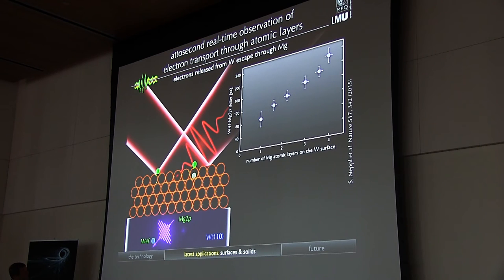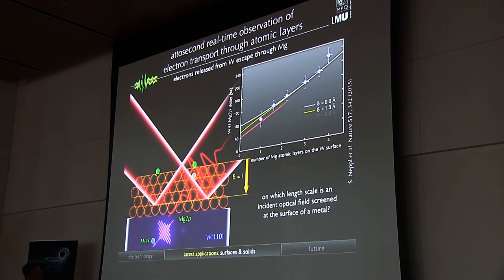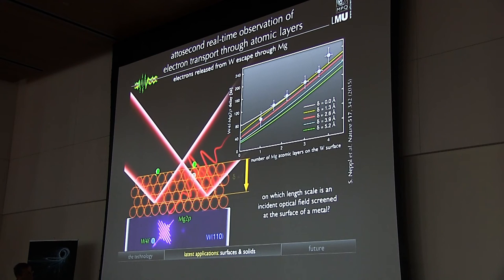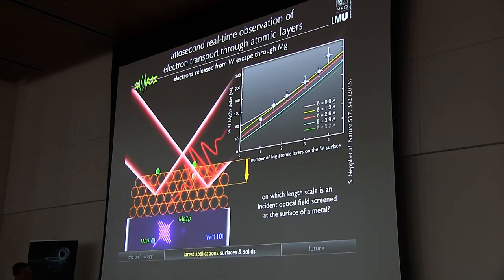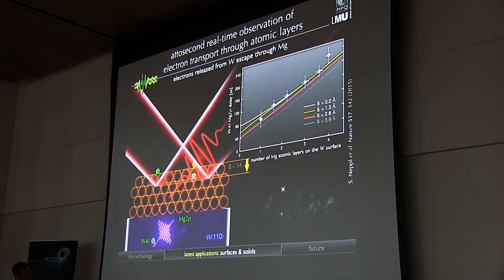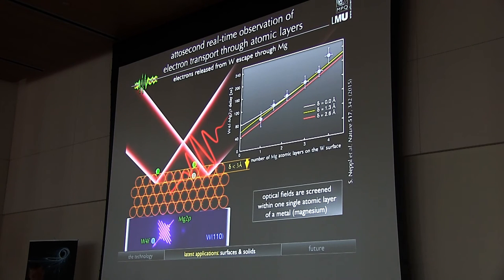So if the streaking laser field actually penetrates somewhat deeper, then we expect, and that's what our model calculations show, we expect a decrease in the propagation time because the electron reaches the field and can start interacting with the field earlier. So now we can just do this modeling, and here you see the results for different values of the assumed penetration depth, and its comparison with the error bars of our measurement sets an upper limit on this screening depth, which appears to be less than three angstroms.